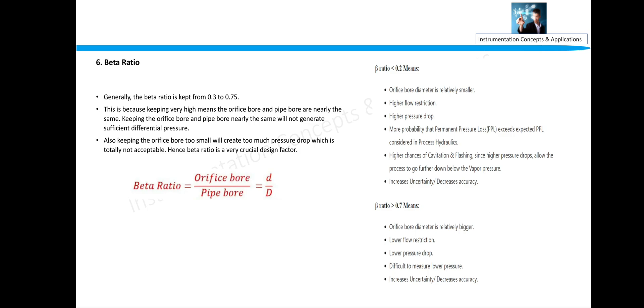If the beta ratio is less than 0.2, then that means orifice bore diameter is relatively smaller. Higher flow restriction will be there, higher pressure drop will be there, more probability of permanent pressure drop exceeds expected PPL considered in process hydraulics, higher chance of cavitation and flashing, and increase uncertainty and decrease accuracy.